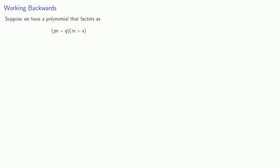So let's consider. Suppose we have a polynomial that factors as (px + q)(rx + s). Now if we expand this out, we get px*rx + px*s + q*rx + q*s = prx² + psx + qrx + qs.